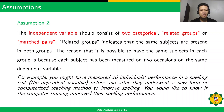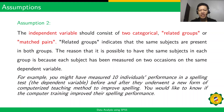For example, you might have measured 10 individuals' performance in a spelling test — that's the dependent variable — before and after they underwent a new form of computerized teaching method to improve spelling. You would like to know if the computer training improved their spelling performance.